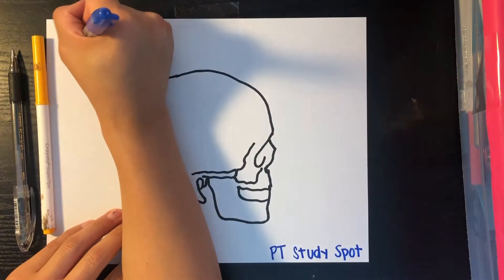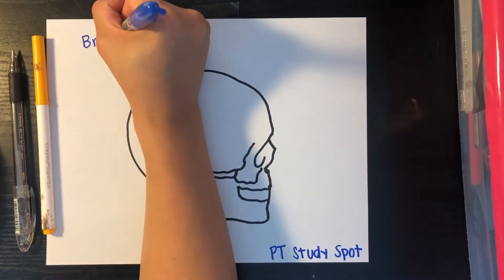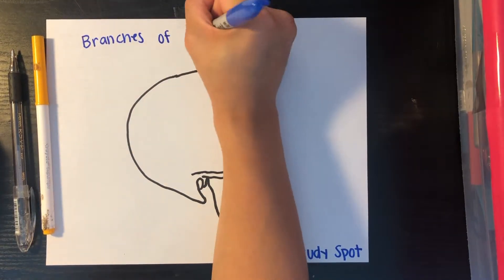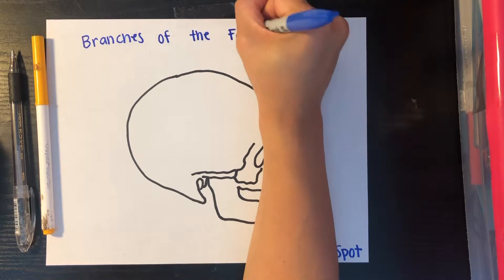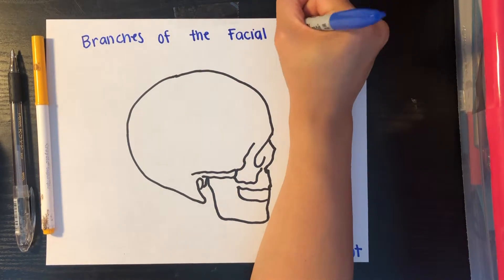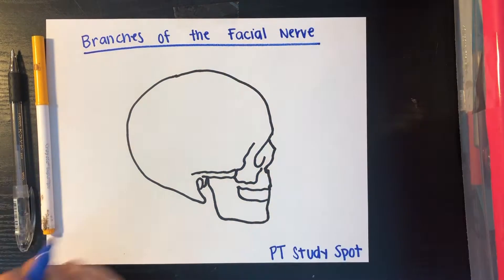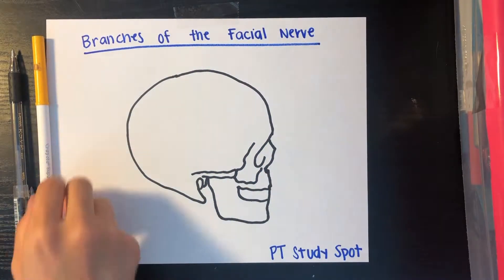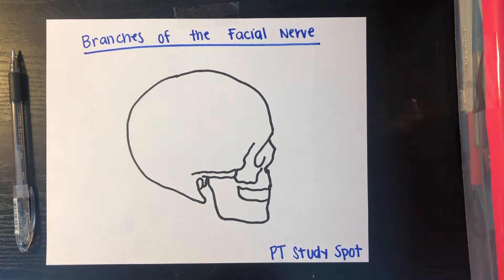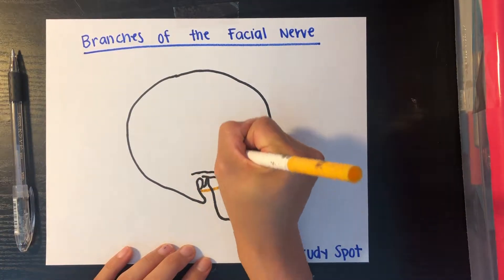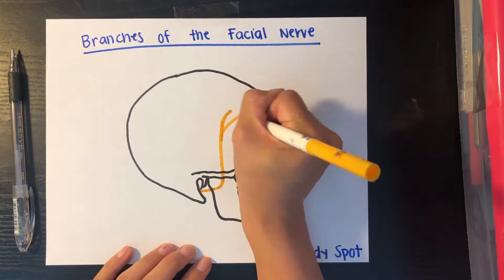Today we're drawing the branches of the facial nerve. You can stop the video at any point to review each branch of the nerve. The facial nerve is part of your cranial nerves and it exits out of the internal acoustic meatus.